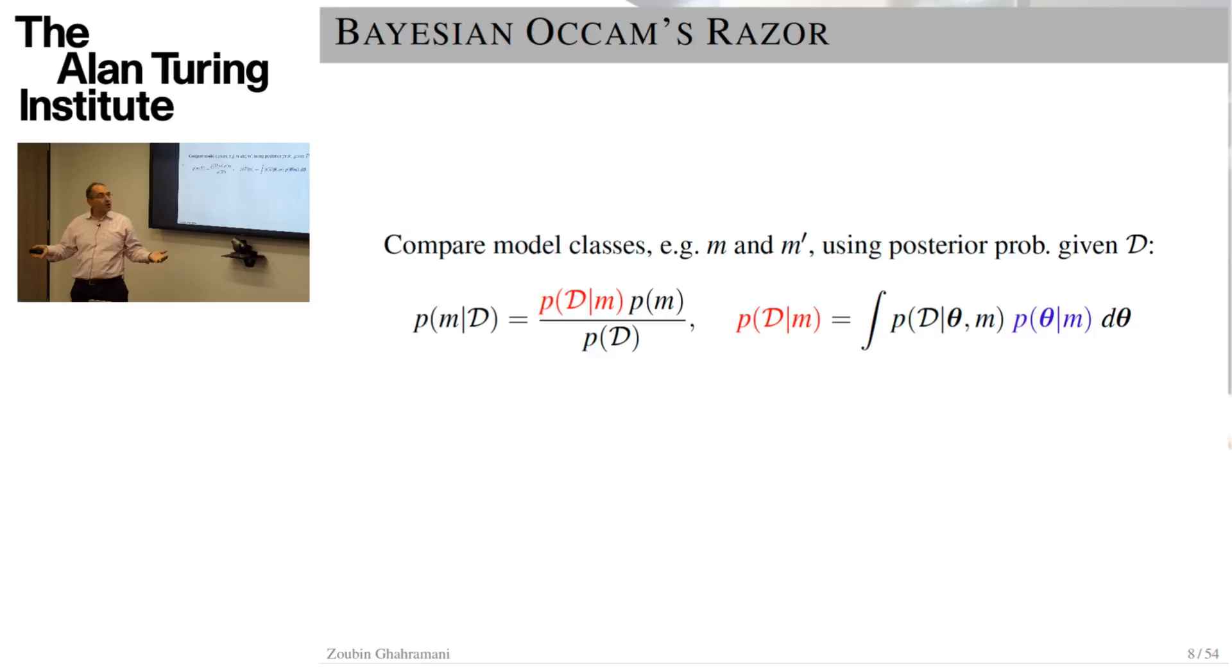In theory, we can use the same framework to answer all these kinds of questions. If we're comparing model classes M and M prime, Bayes' rule tells us what we should be doing is computing the posterior probability of the model class given the data. We could encode a simplicity prior that says we prefer simple models to more complicated models, usually thought of as Occam's razor. But the interesting thing is that this term in red, this marginal likelihood, also has a preference for simplicity built into it. This is called Bayesian Occam's razor.